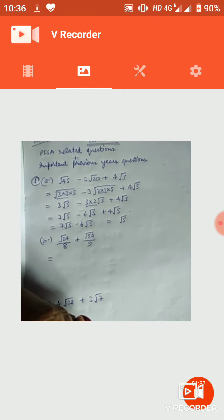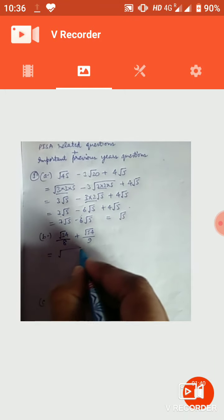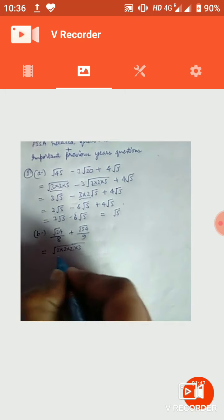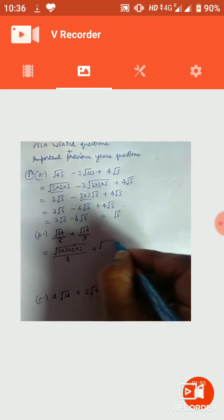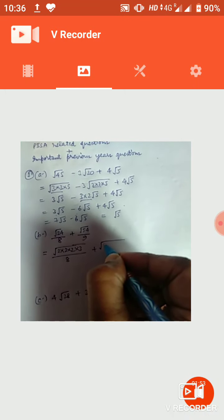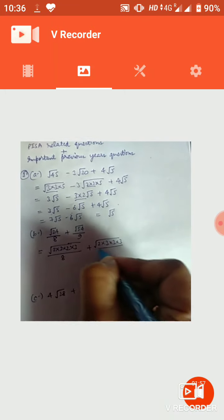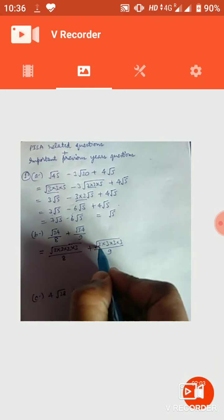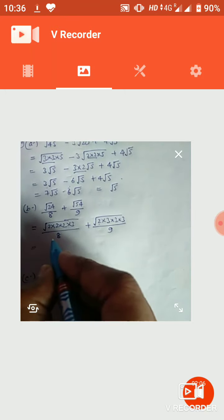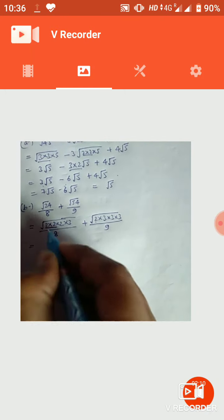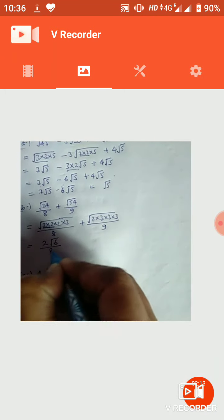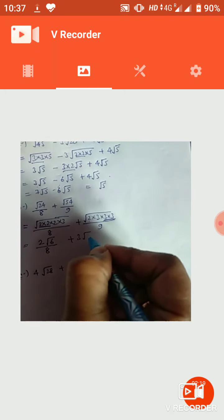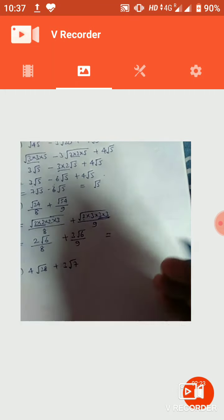अब दूसरा सवाल: √24 upon 8 plus √54 upon 9. तो √24 के 24 के फैक्टर करिए — pair में से एक factor बाहर आ जाएगा, यह हो गया 2√6 upon 8. यहाँ पर भी देखिए 3 बाहर आ जा रहा है — 3√6 upon 9.